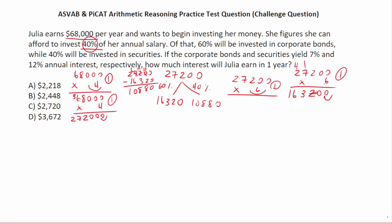These are the amounts she's going to invest. To find out how much interest she's going to earn on these investment amounts, we're going to use the simple interest formula: interest equals principal times rate times time. We're going to have to do that for both. Corporate bonds yield 7% interest and securities yield 12% annual interest.